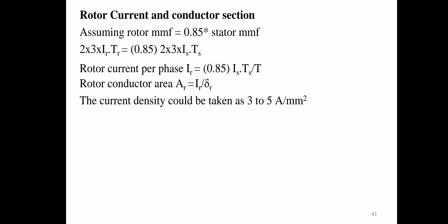Assuming rotor MMF = 0.85 × stator MMF: 3 × Ir × Tr = 0.85 × 3 × Is × Ts. Hence rotor current per phase: Ir = 0.85 × Is × Ts / Tr. Rotor conductor area: Ar = Ir / δr. The current density may be taken as 3 to 5 A/mm².